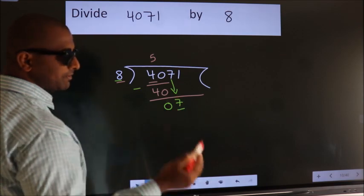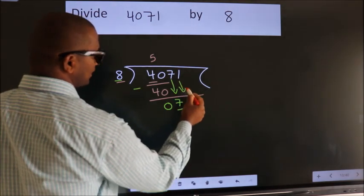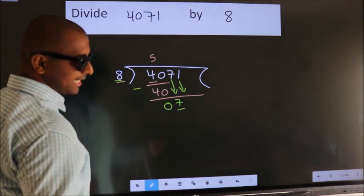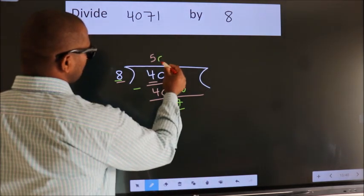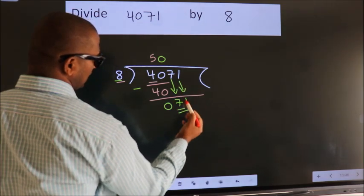So we should bring down the second number. And the rule to bring down the second number is, put 0 here. Then only we can bring down this number. So, 71.